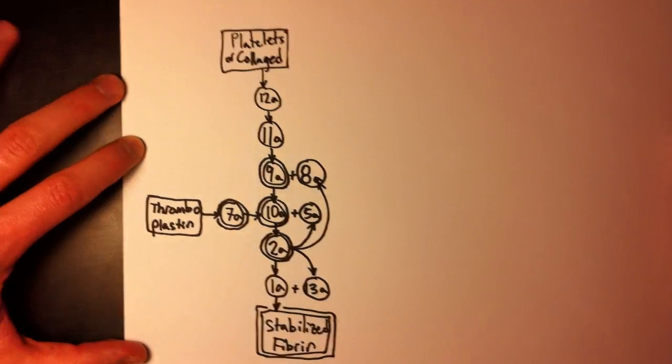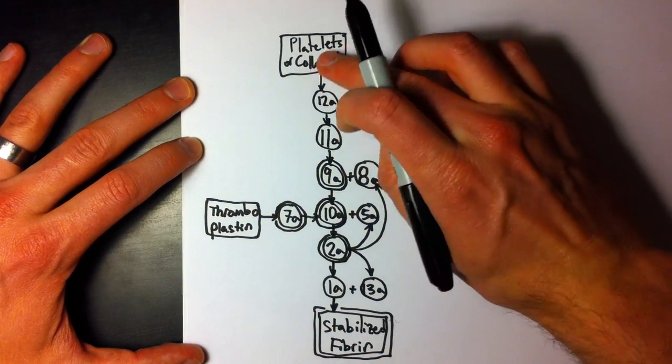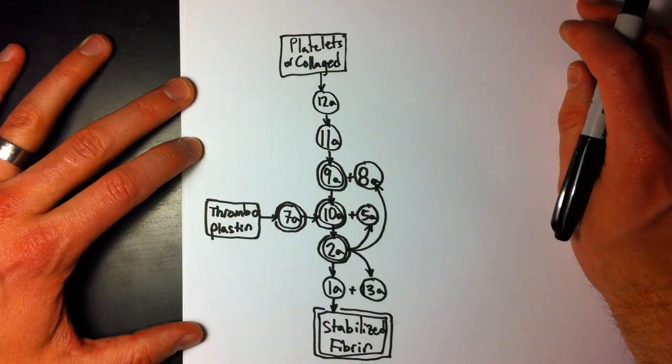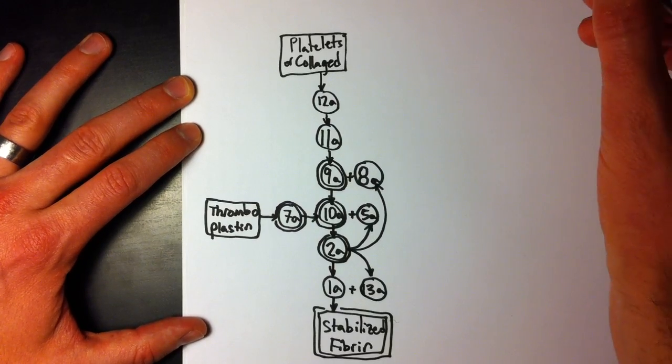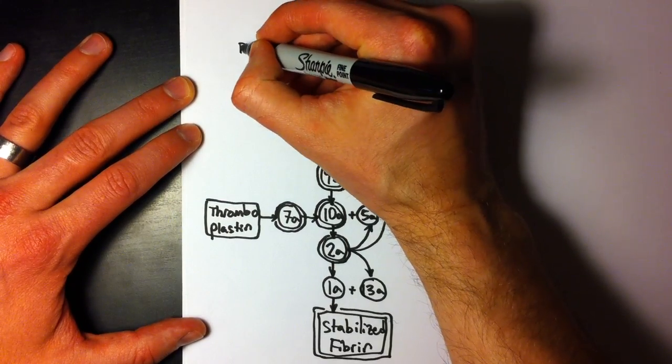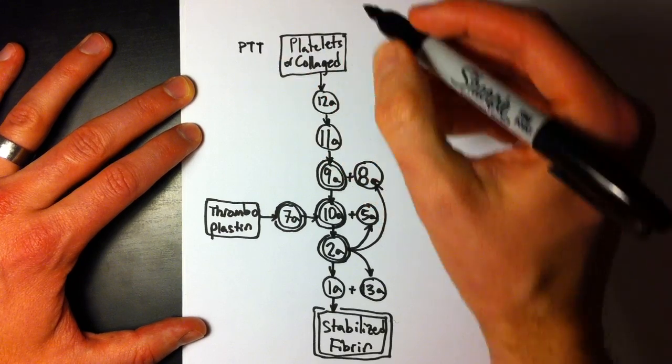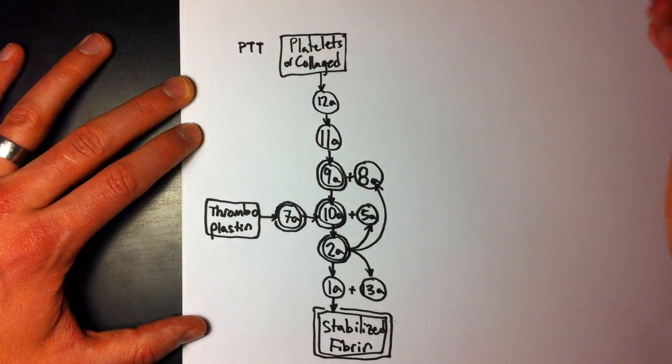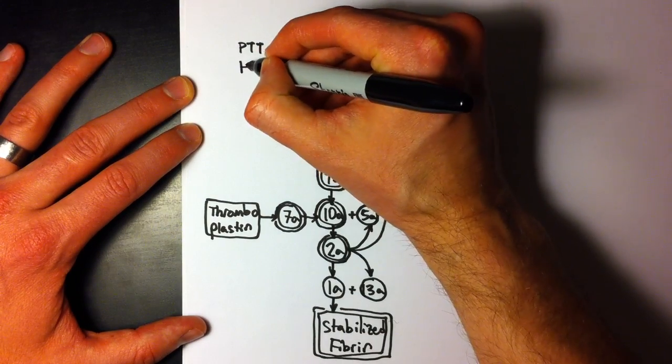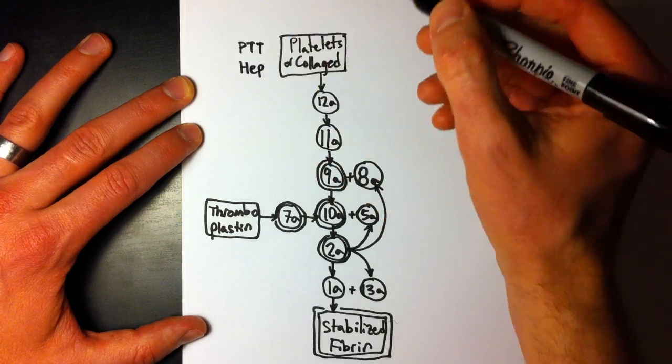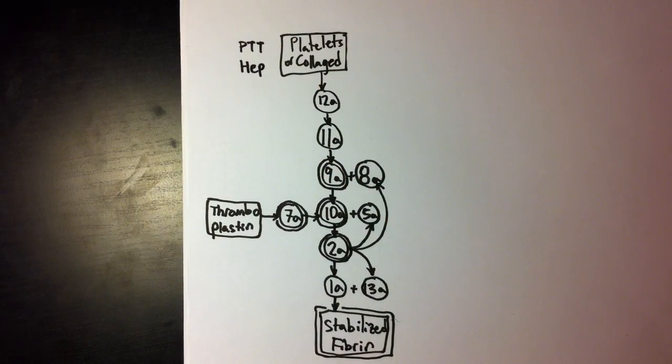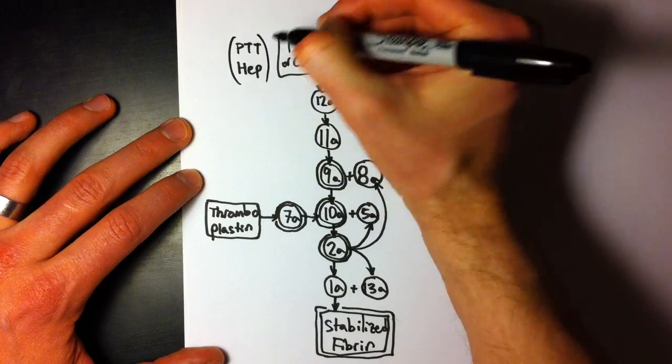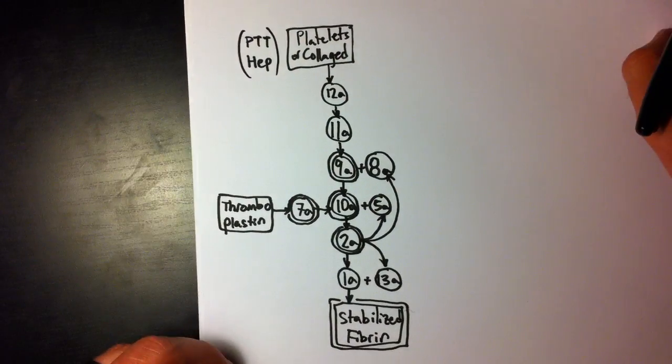So I just thought I'd mark some of that. And first of all, the intrinsic pathway that we have running down the middle is usually tested for by using PTT. And the drug that affects that the most, or at least is classically understood to affect it the most, is heparin, which I abbreviate HEP. They're both three letters, so they kind of stick together for me. I'll just put those in parentheses since they're not actually participating, how we have it drawn out.